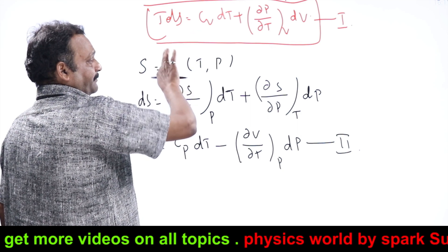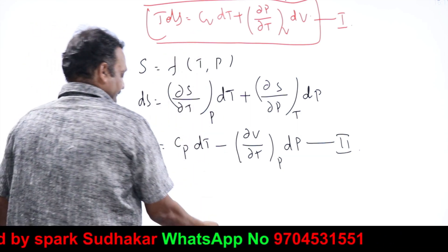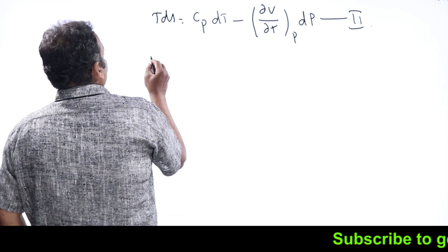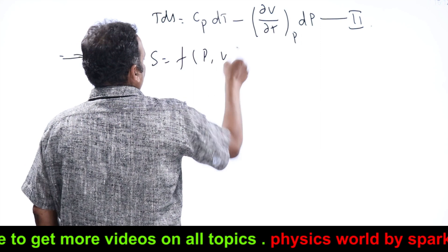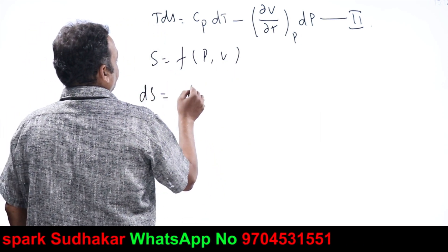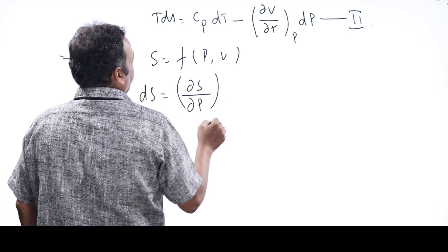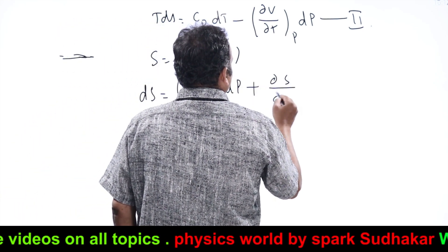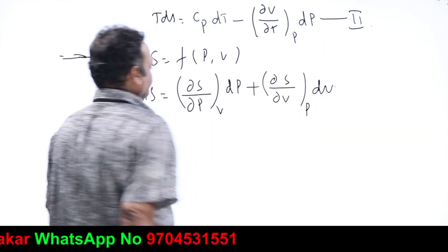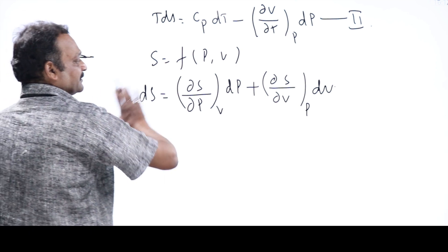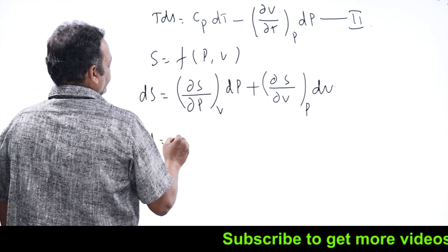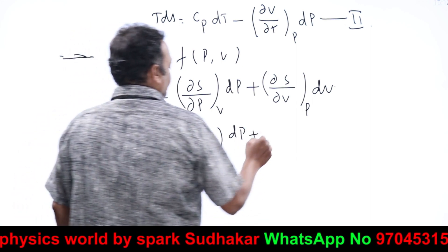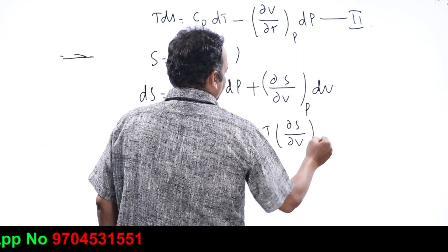Let entropy be a function of pressure and volume. Differentiating: dS = (∂S/∂P)ᵥ dP + (∂S/∂V)ₚ dV. Multiplying both sides by T: TdS = T·(∂S/∂P)ᵥ dP + T·(∂S/∂V)ₚ dV. Now here the denominator contains pressure, not temperature, so we need to bring temperature into the denominator.